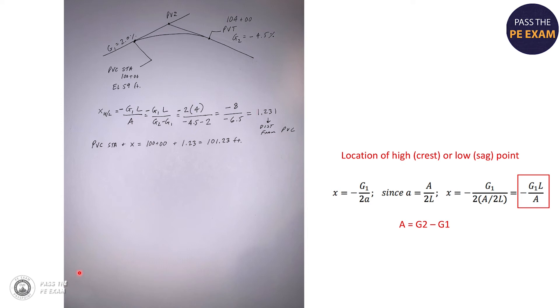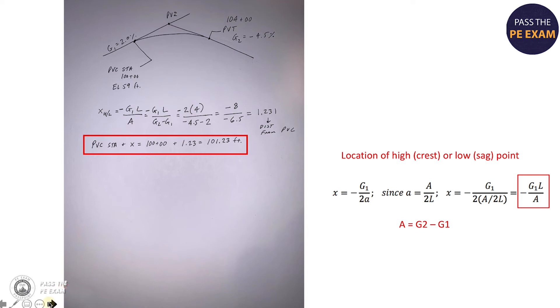Now that's the distance from the PVC station, which we know is 100. So we can now take 100 plus this distance of 1.23, and we can determine that the station at the high point of this curve is 101.23, which is of course answer A.